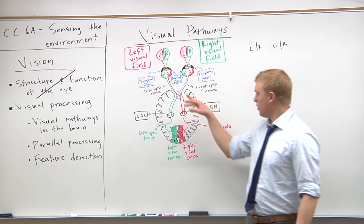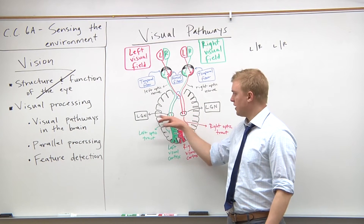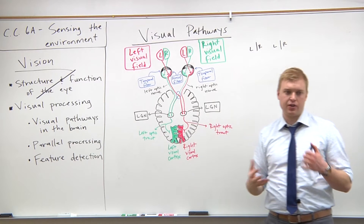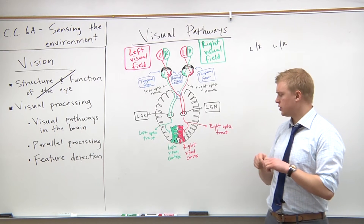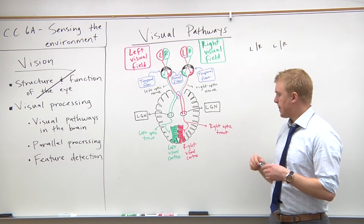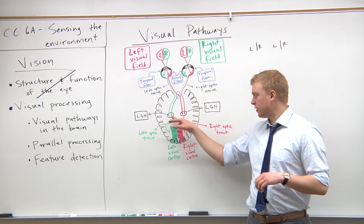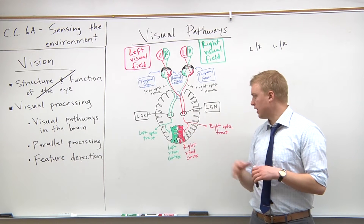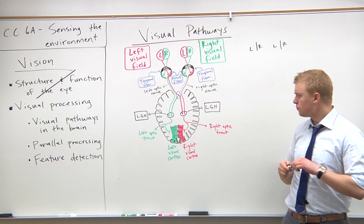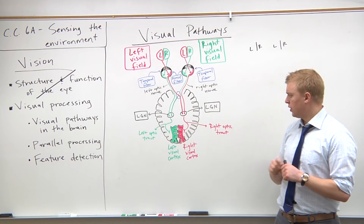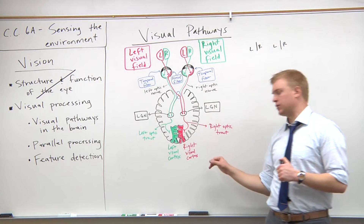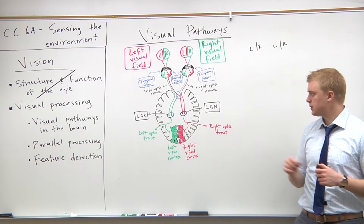Following the signal further, we have the LGN — the lateral geniculate nucleus — which does further processing. Then it comes out as a left and a right optic tract, which lead to the left visual cortex and right visual cortex respectively.